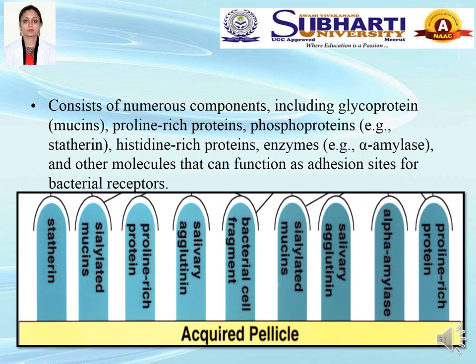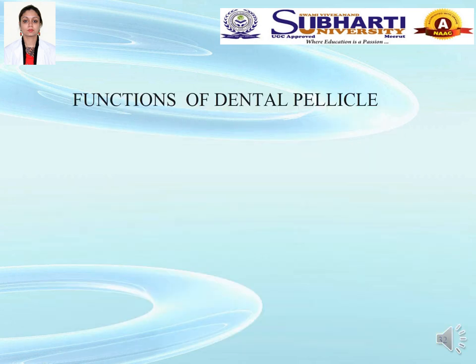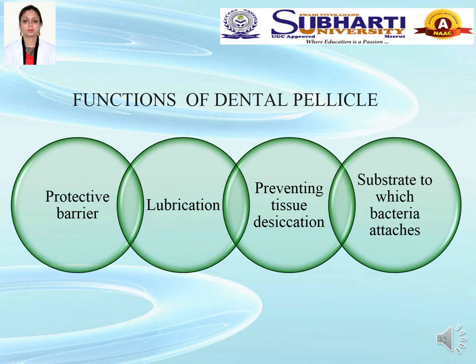The acquired pellicle consists of various components like statherin, sulfated mucins, proline-rich proteins and salivary agglutinins, which act as adhesion sites for bacterial receptors. The primary colonizers, which have bacterial receptors, attach with their receptors onto these adhesion binding sites on the acquired pellicle. Functions of the dental pellicle: it acts as a protective barrier, helps in lubrication, prevents tissue from desiccation, and acts as a substrate to which bacteria attach.